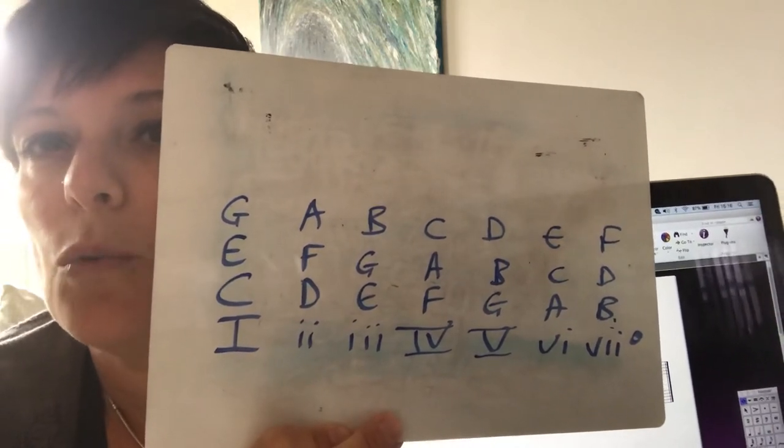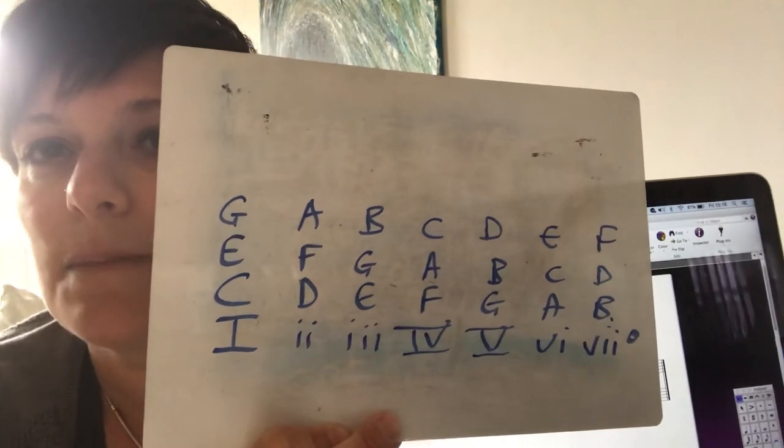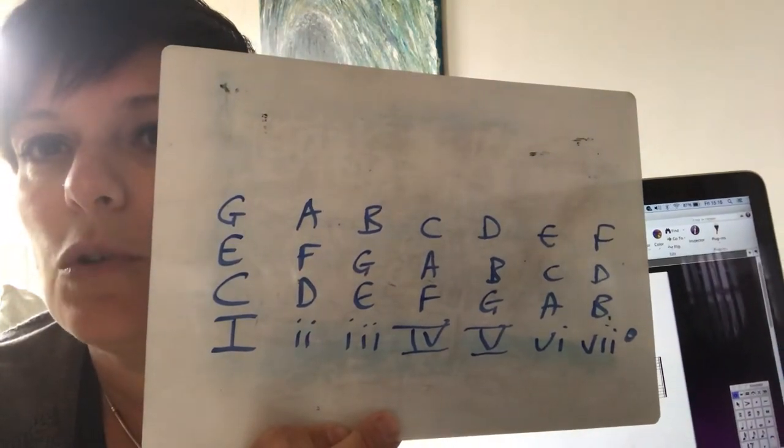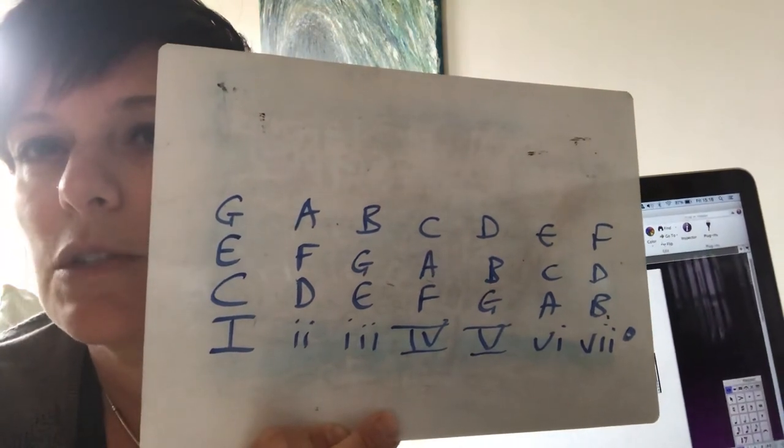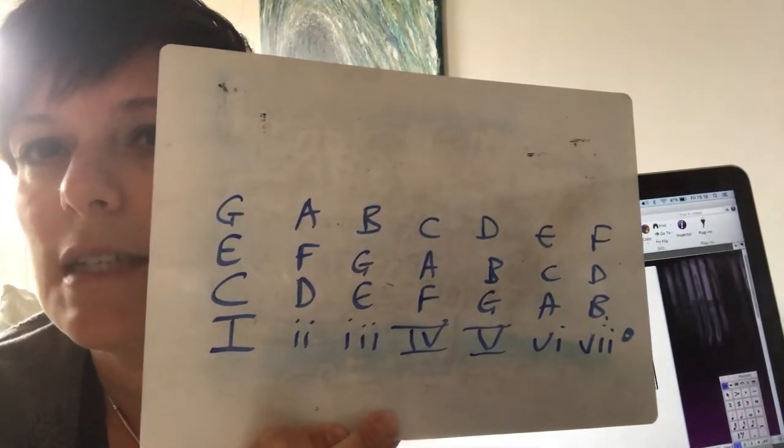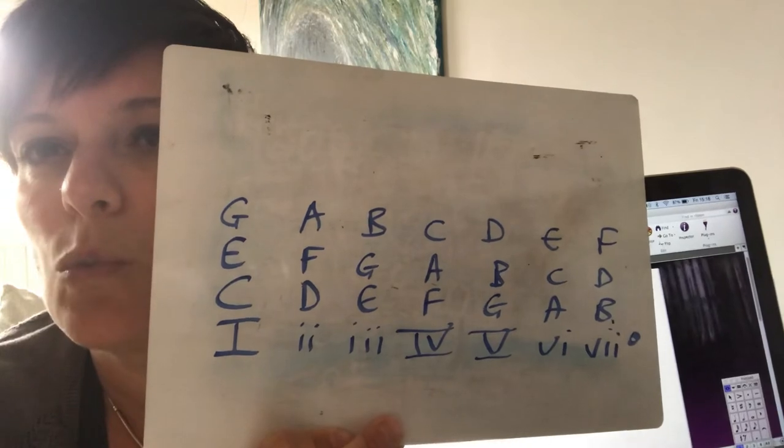We could look at chord 4 which has an A and a C in it. So it could be chord 4. But also don't forget my G. Let's look for a chord that's got a G and a C in it as well which could also be chord 1.